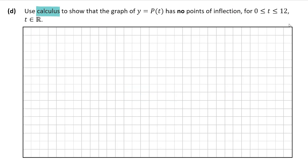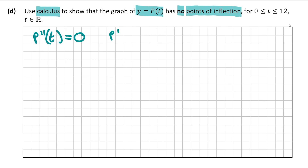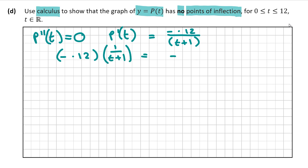Question D asks us to use calculus to show the graph of y = P(T) has no points of inflection for 0 ≤ T ≤ 12. At a point of inflection the second derivative equals zero, so we need to show that doesn't occur here. We rewrite P'(T) = minus 0.12 over (T + 1) as minus 0.12 multiplied by (T + 1)^(minus 1) to make differentiation easier.